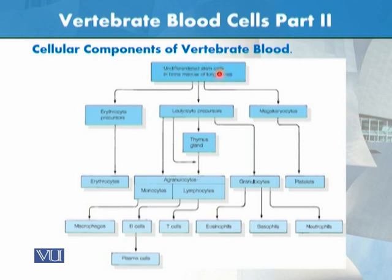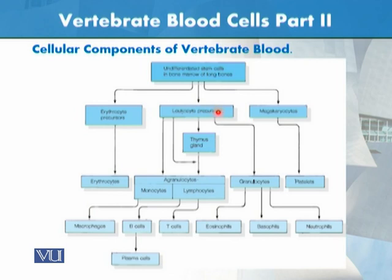These are undifferentiated stem cells which are generally present inside the bone marrow. From these, we can see three types. One very important lineage is the leukocytes — the WBCs. Among these are granulocytes, which include eosinophils.